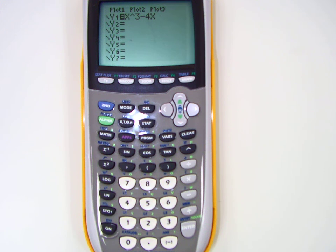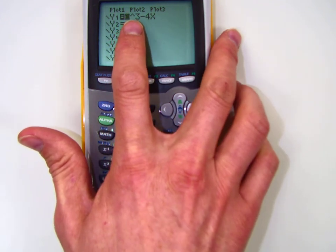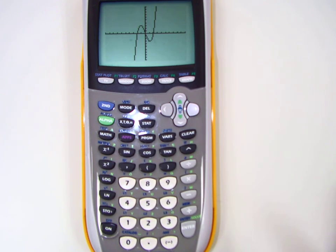I want to teach you a couple of things to do with a graphing calculator. We have y equals x to the third minus 4x. When you graph it, it looks like this.